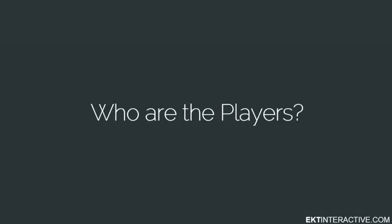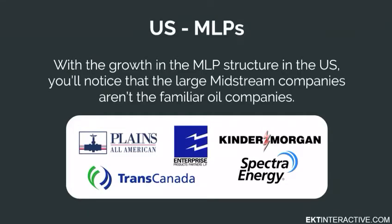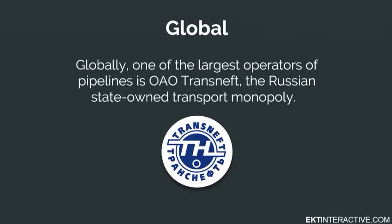So, who are the key players in midstream? With the growth of the MLP structure in the U.S., you'll notice that the large midstream companies aren't the familiar oil and gas companies. Some of the largest midstream MLPs are Plains All-American, Enterprise Product Partners, Kinder Morgan, TransCanada, and Spectra Energy. Some MLPs concentrate only on transmission pipelines, some on oil, and many on natural gas, and others on converting natural gas to high-valued NGLs or petrochemical feedstocks. The energy MLP structure is solely a United States business entity. Globally, one of the largest operators of pipelines is OAO Transneft, the Russian state-owned transport monopoly. And there's a good list of other major pipeline operators throughout Europe, Asia, and Africa on Wikipedia — we'll be sure to put the link in the program notes.